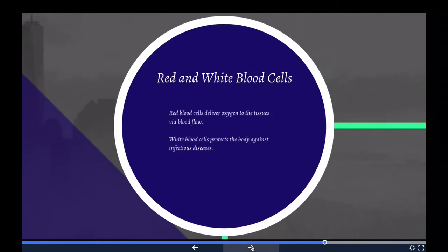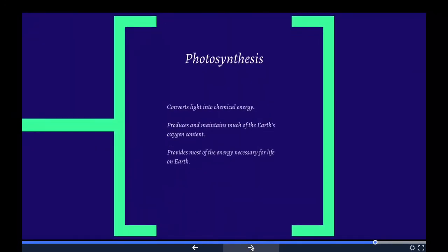White blood cells are the cells of the immune system. They're involved in protecting the body against both infectious disease and foreign invaders. All white blood cells are produced and derived from multipotent cells in the bone marrow known as stem cells. Our big points here are red blood cells deliver oxygen, white blood cells help to fight off disease. If you understand that basic difference, we should be good to go with red and white blood cells.